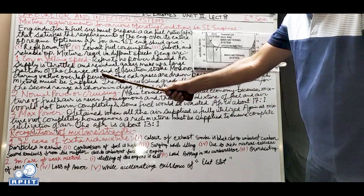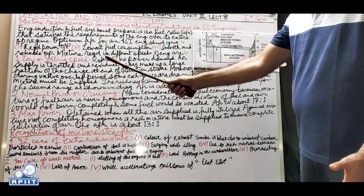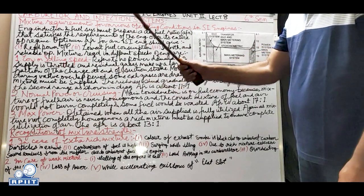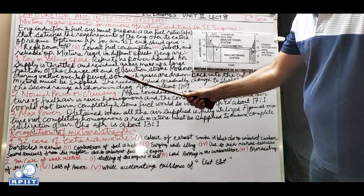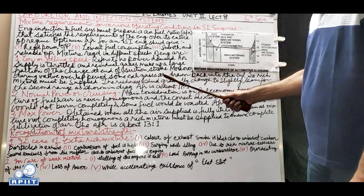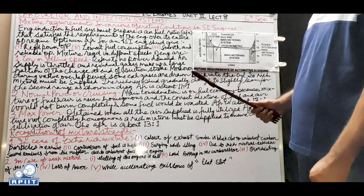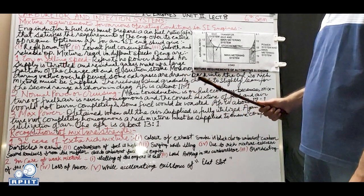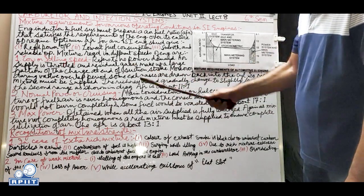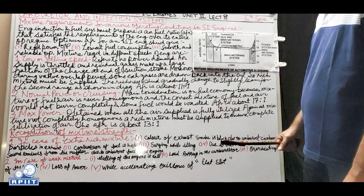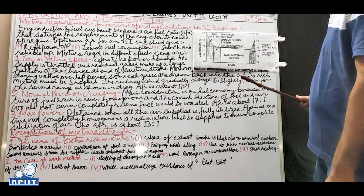During the valve overlap period - when the inlet and outlet valves are both open simultaneously - some exhaust gases are drawn back into the cylinder during the suction stroke. For these idling conditions, a rich mixture must be supplied, and this richness should gradually change to a slightly lean mixture for the second operating range.